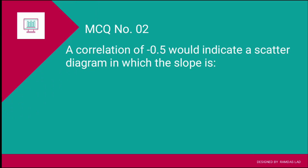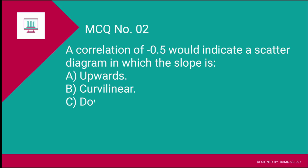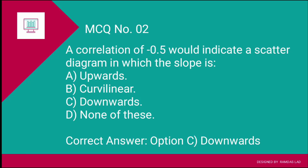Question number two: A correlation of minus 0.5 would indicate a scatter diagram in which the slope is — if you draw the scatter diagram and look at the slope. The options are: A) upwards, B) curvilinear, C) downward, D) none of these. Since the correlation is minus 0.5, it means there is a downward trend, so the correct answer is option C — downwards.